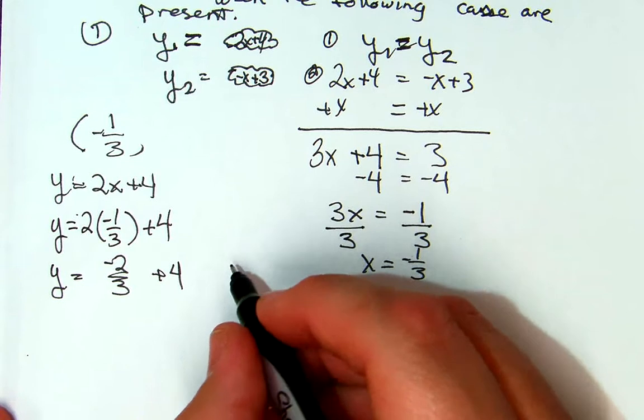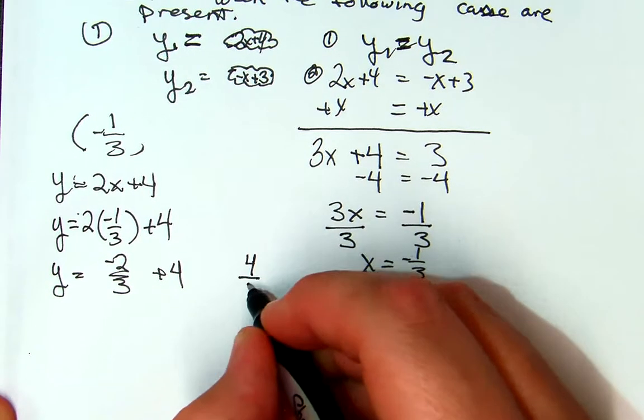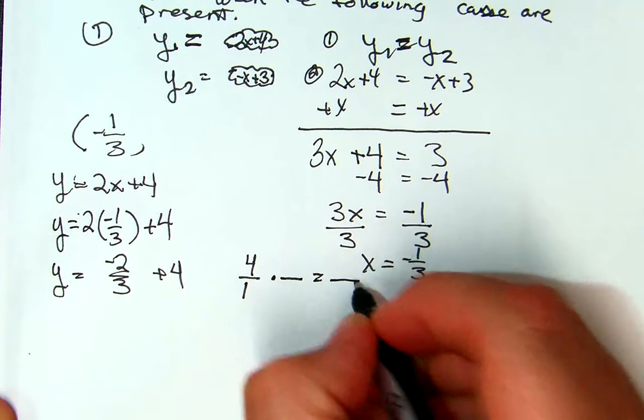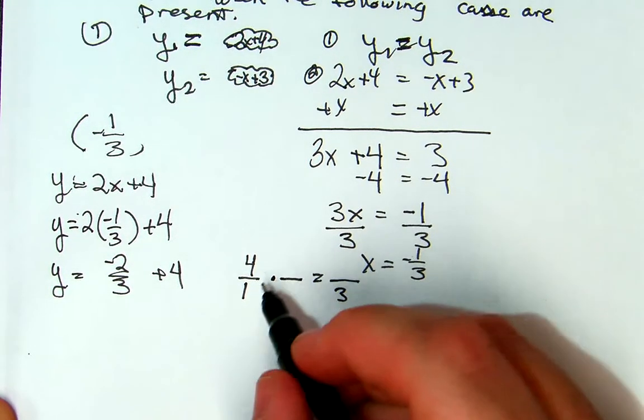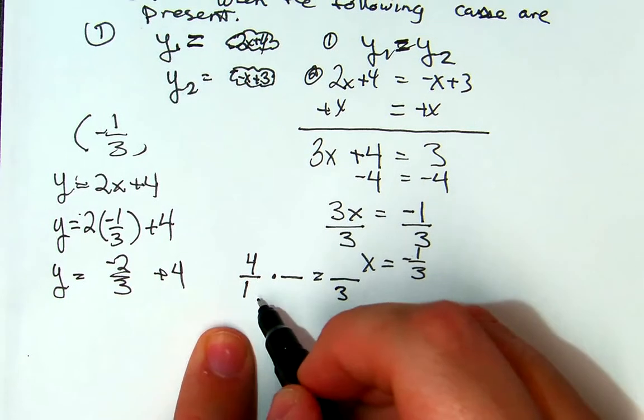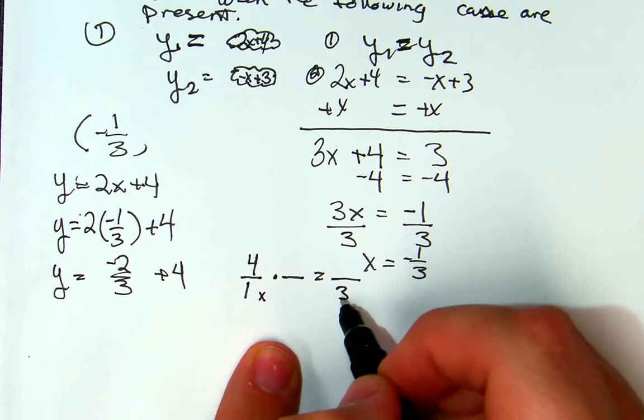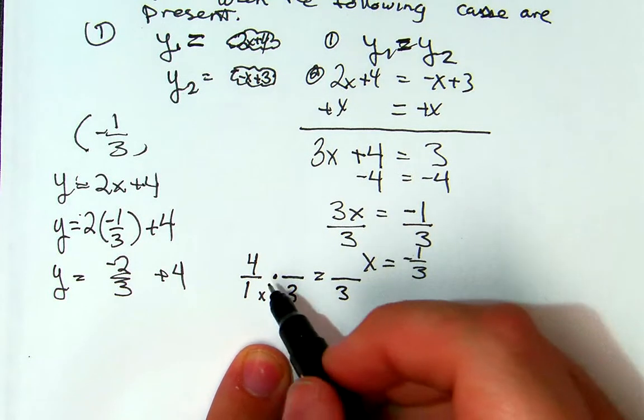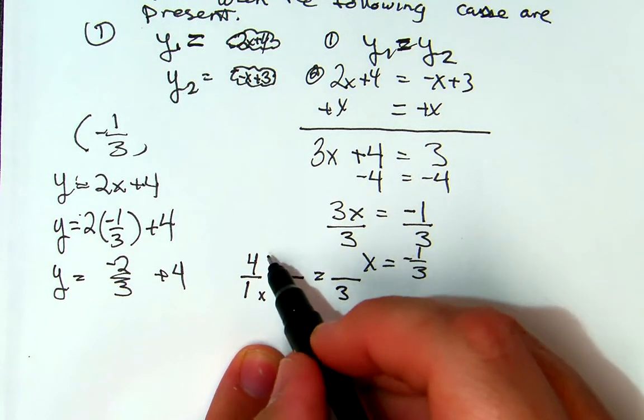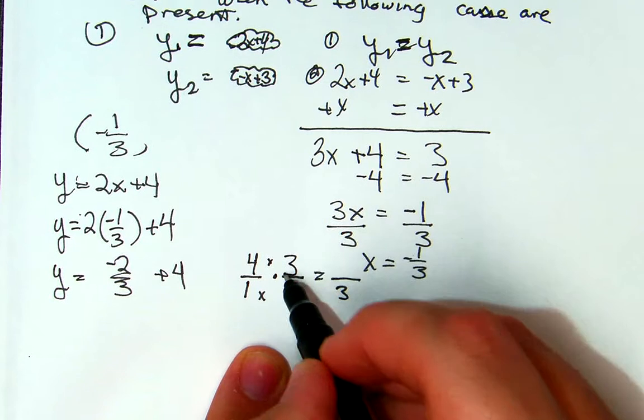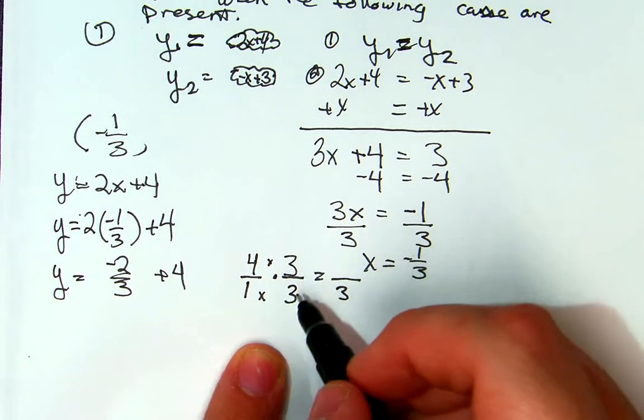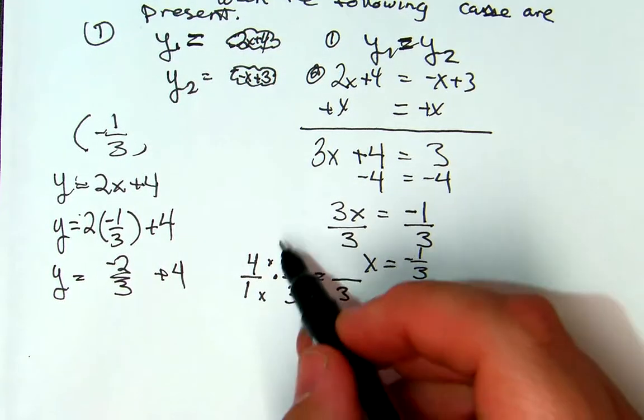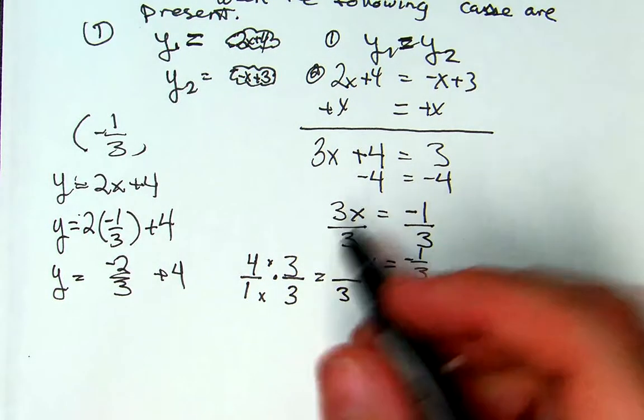So I'm going to take that 4 and say it's really 4 over 1, times something to get me to a fraction with a denominator of 3. So I have to take 1 times something to get to 3. What am I going to multiply that 1 times? 1 times 3 is going to get me to 3. So that tells me exactly what's going to be in the top, which is a 3, because what am I really multiplying by? What's 3 over 3? 1. So is that changing the value of 4? No.